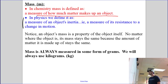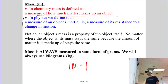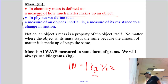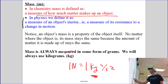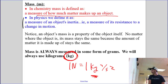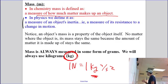We can use any form of grams, but because a Newton is a kilogram meter per second squared, we really need to make sure that we stick with kilograms so that our units work out. We will always measure mass in kilograms. That's mass — we've talked about that, you know what it is.